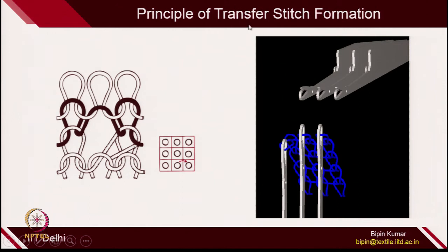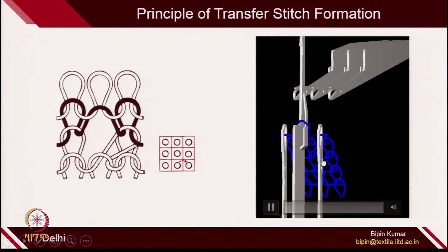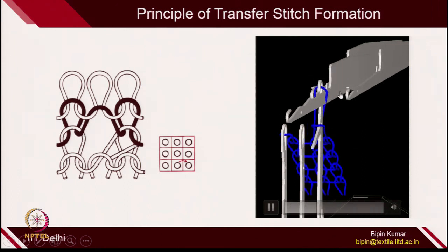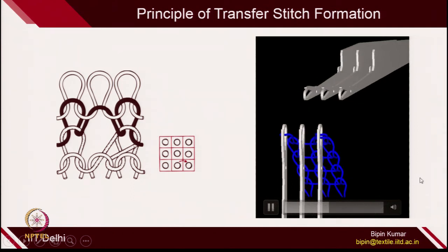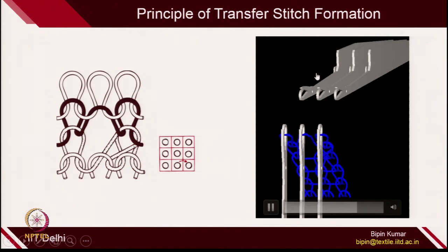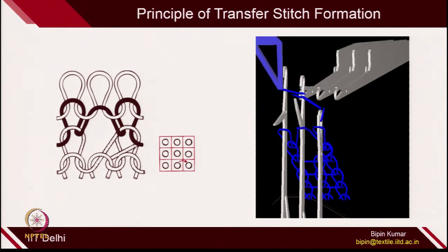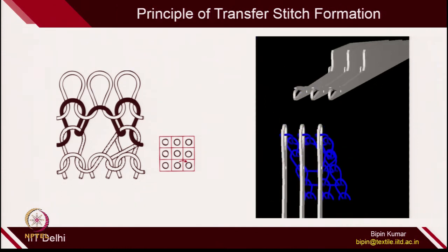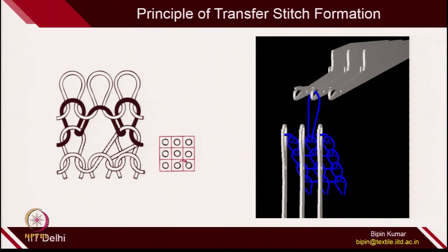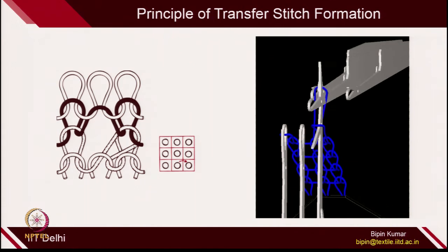For transfer stitch formation, the machine must have the potential for racking and loop transfer. The loop is first transferred from one bed to the other bed, then with the help of racking the bed is shifted, and again with the transfer function the loop is moved from one column to another. These 4 principles — how you create loop, tuck, float and transfer — must be clear in your mind. Once that is clear, you can create any fabric design; it just depends on your imagination and the capability of the technology.